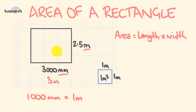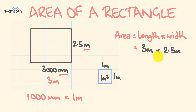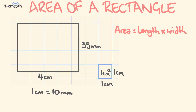Now we can work out the area. The area is equal to the length times the width: three meters multiplied by two point five meters. Three times two point five gives us an area of seven point five meters squared.